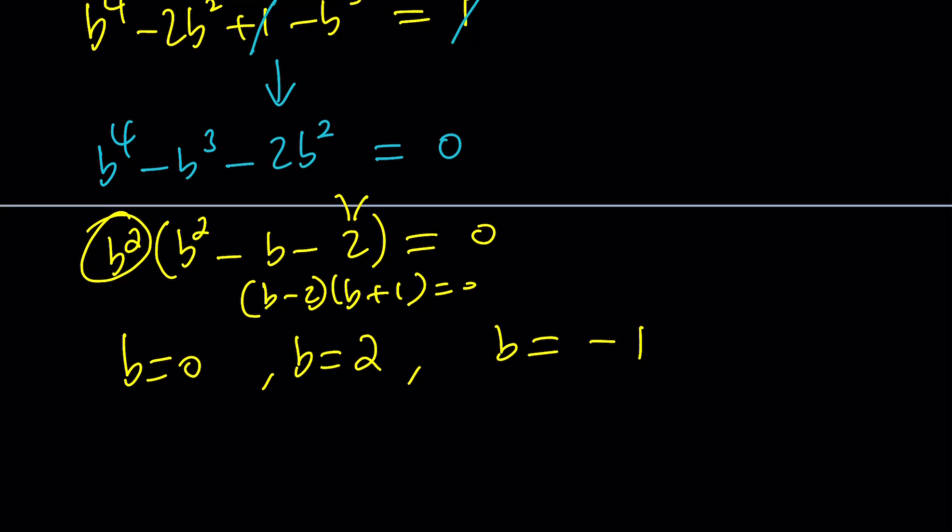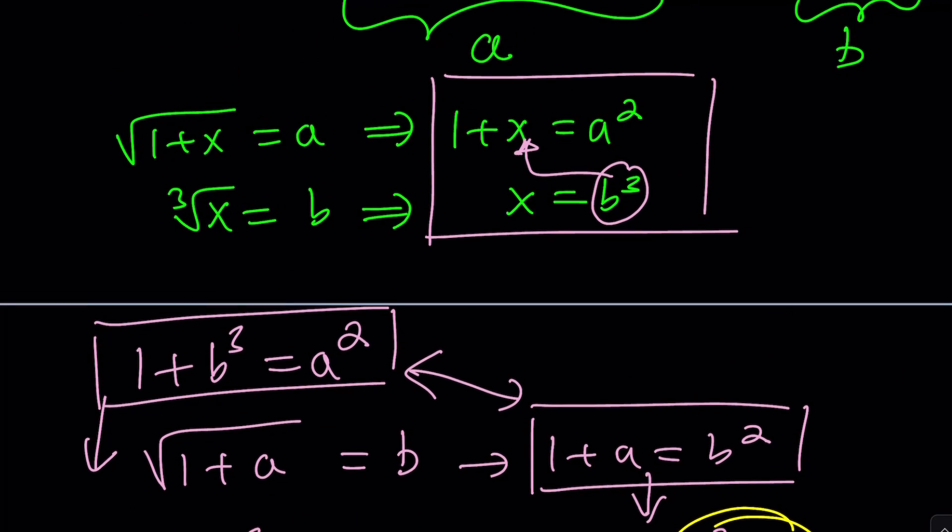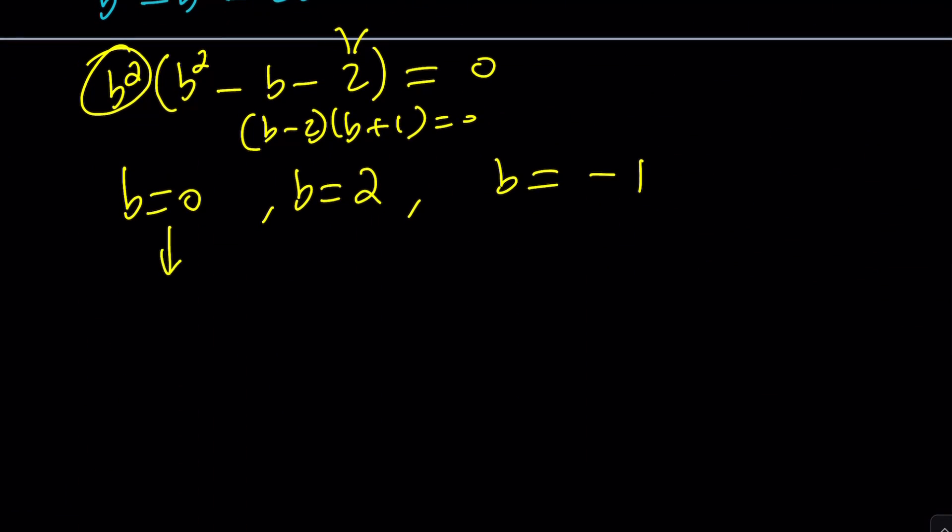Now we need to back substitute because we're looking for x. And the relationship between x and b is x equals b cubed. So by cubing these values, we're going to be able to get x. If b is 0, x is going to be 0. If b is 2, x is going to be 8. And if b is negative 1, x is going to be negative 1 as well.